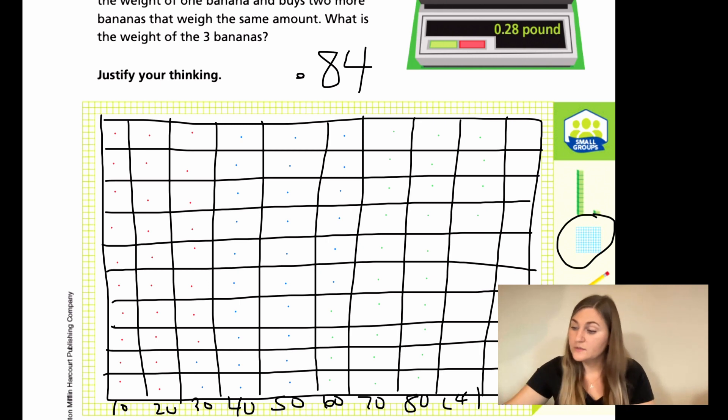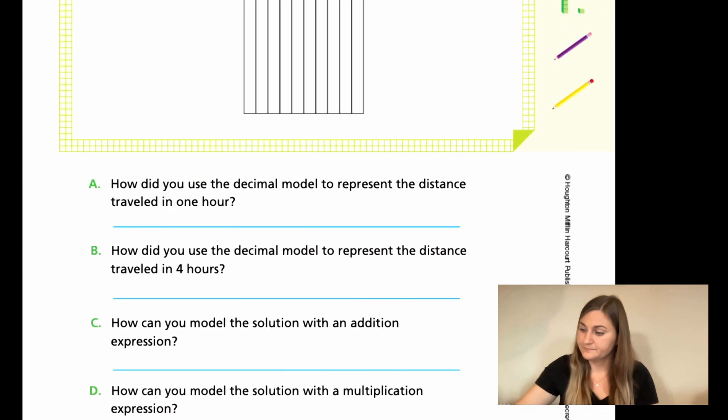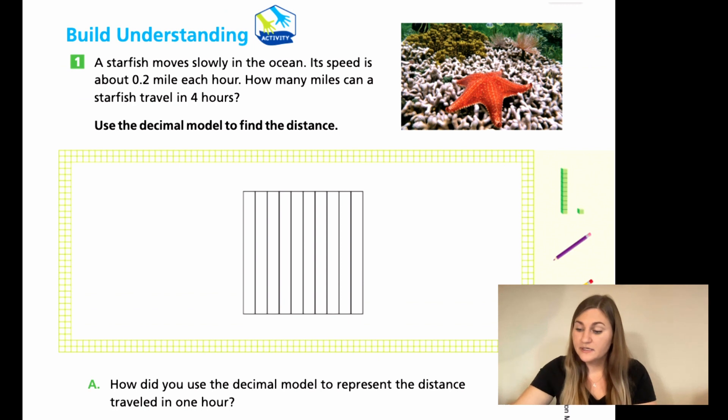Alright, let's go ahead and flip the page. So the build your understanding number one says a starfish moves slowly in the ocean. Its speed is about 0.2 miles each hour. Very slow. So how many miles can a starfish travel in four hours?